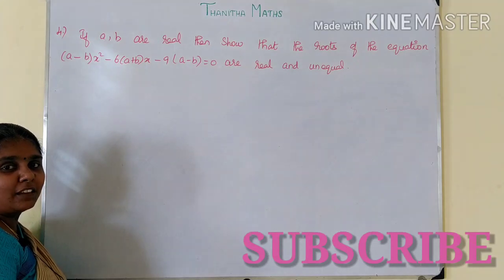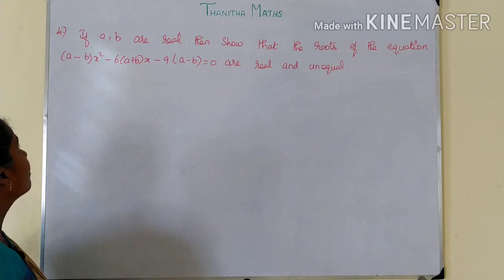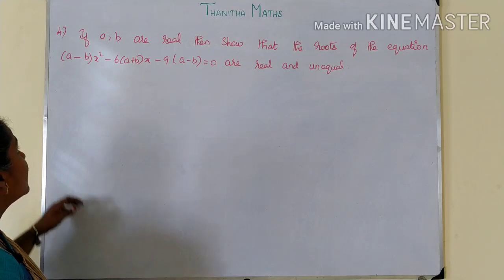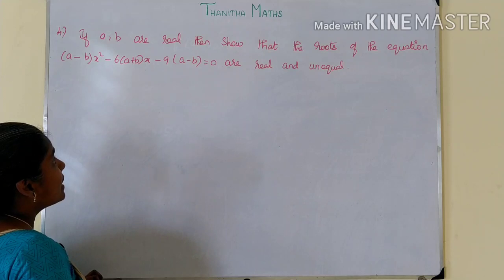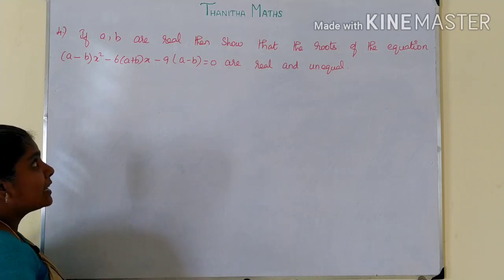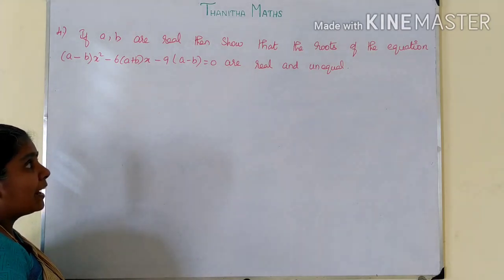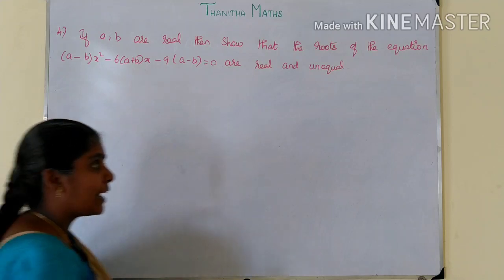Welcome students. Now, if a and b are real, then show that the roots of the equation (a minus b) x squared minus 6 into (a plus b) into x minus 9 into (a minus b) equal to 0 are real and unequal. So we need to prove the roots are real and unequal.